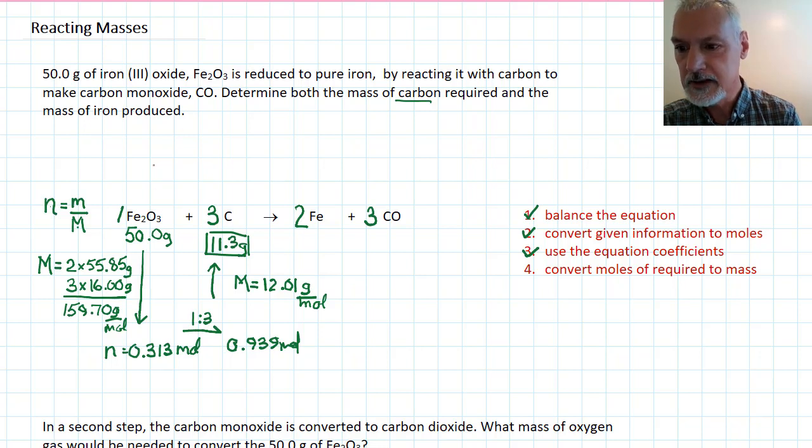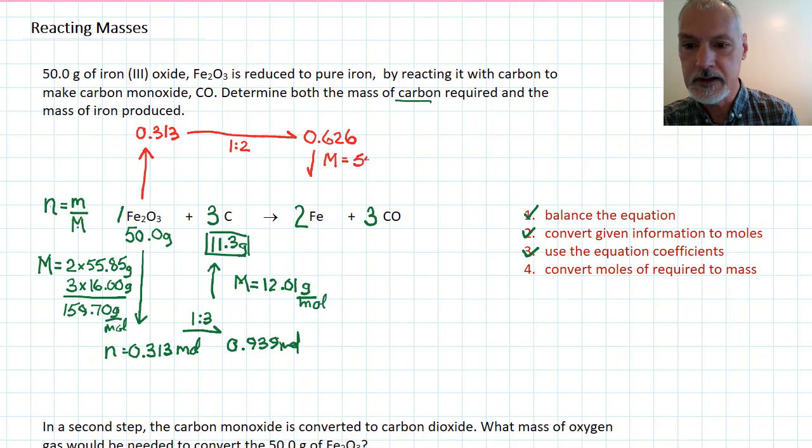Now, for the mass of iron, let's work up here for that. Again, I take the 50 grams, I convert it into moles, so it's going to be the same number, 0.313 moles. Now, I'm going all the way over here to the substance iron, and the ratio that exists here is 1 to 2. Hence, I'm going to produce twice as much iron as iron oxide, so 0.626, and now I want to convert those moles back into grams. Now, all I need is what the molar mass is of iron, and again, from the periodic table, we saw 55.85 grams per mole. To find the mass, I multiply these two together, just as I did before, and that's going to take me to 35 grams.